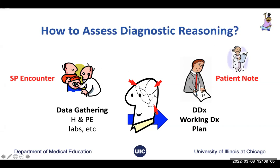When we look at data gathering, we typically assess it in the context of an SP encounter — a standardized patient encounter — and the differential and so on in the context of a patient note, which is frequently assessed by faculty.